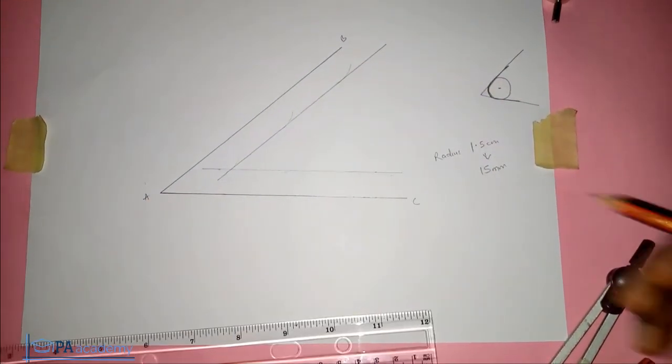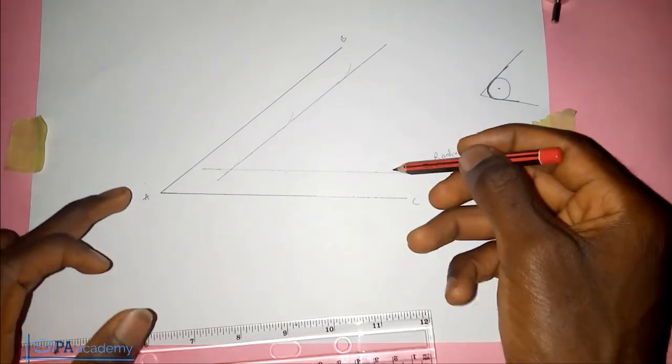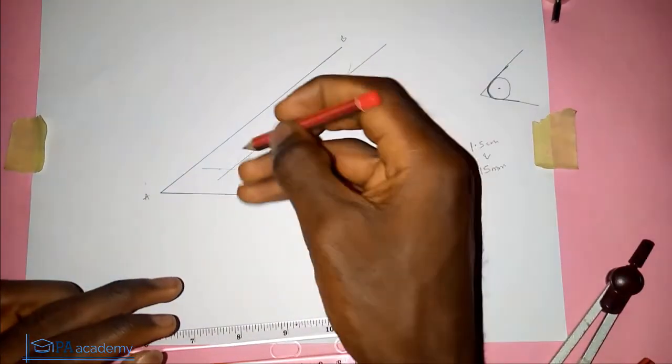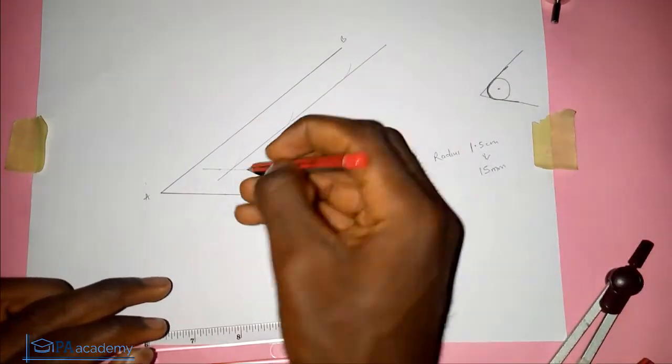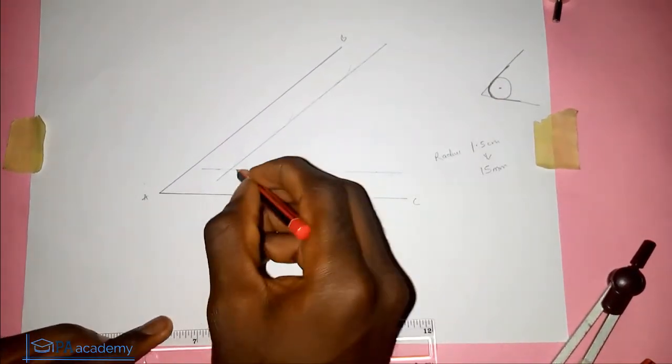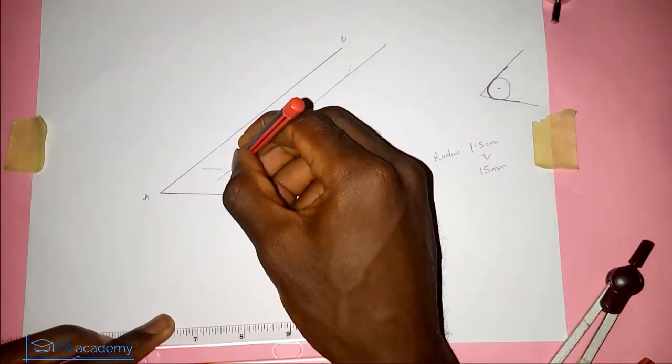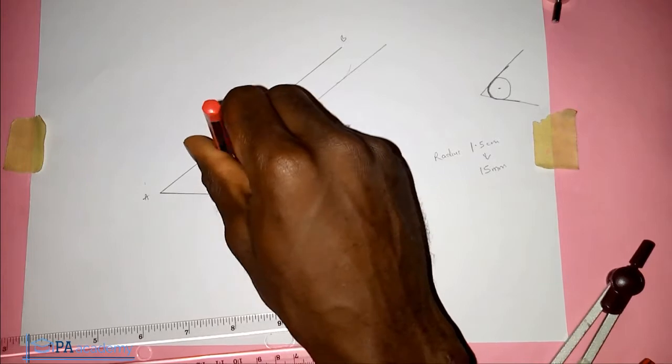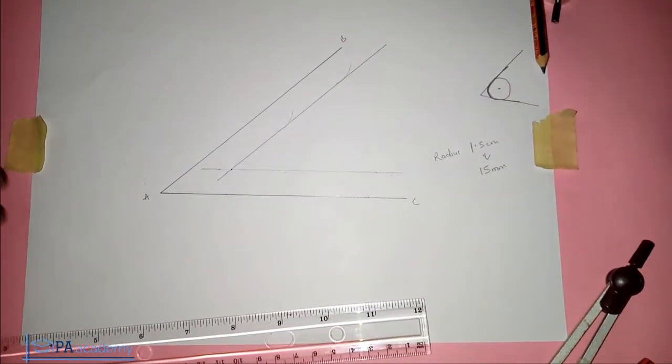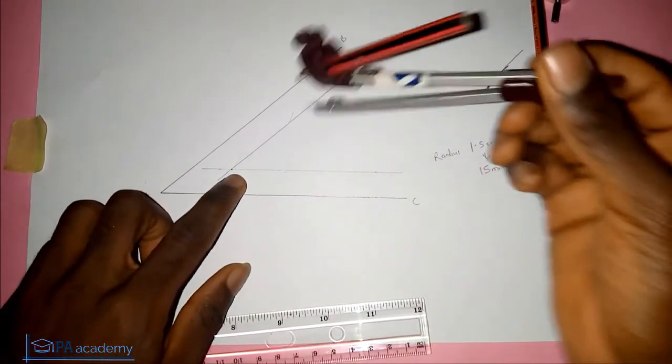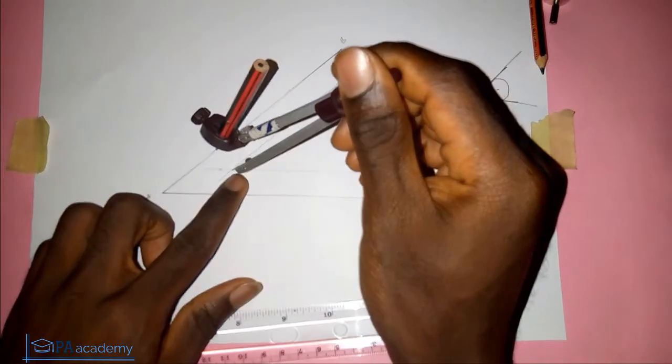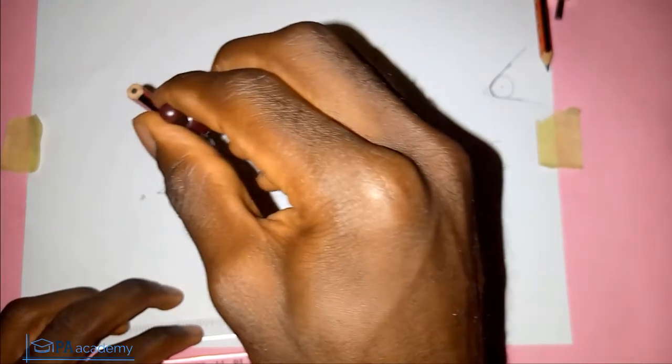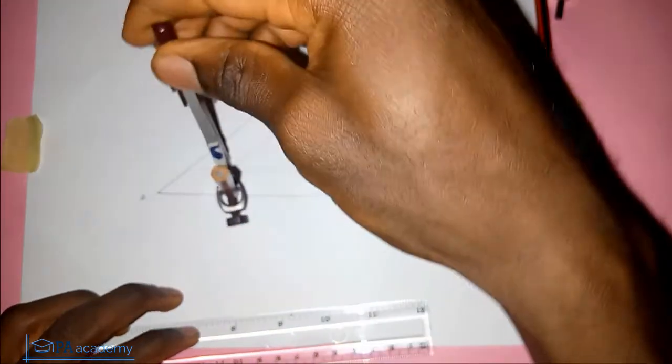So now where these two lines that we've just drawn - these two parallel lines, this line that is parallel to line AC and line AB - where they meet, that is going to be the center, this is the meeting point. So that will be the center of the arc or the circle that we want to draw, depending on what you want to draw, maybe an arc or a circle. So from this point with the same 1.5, you place it at the meeting point so with that you'll be able to draw a circle or an arc.